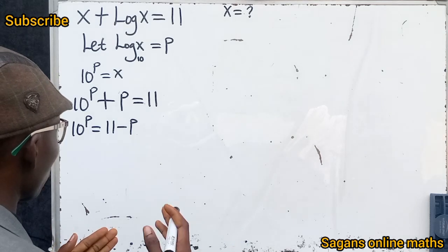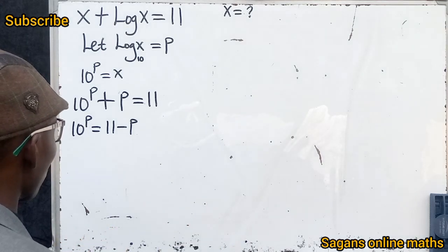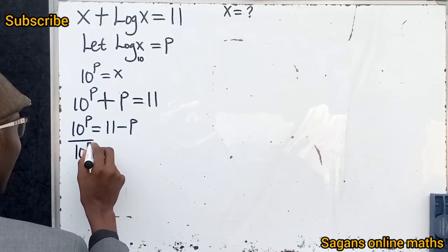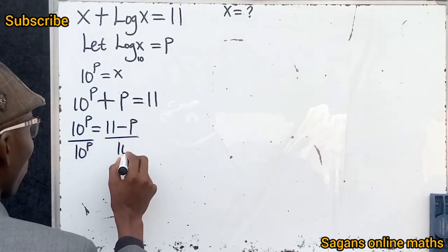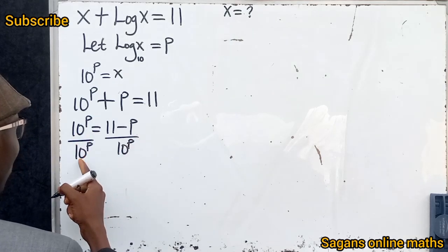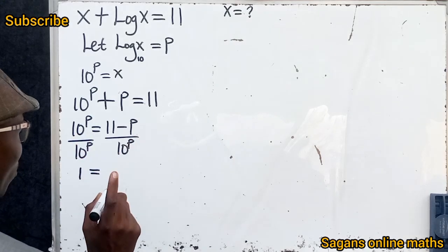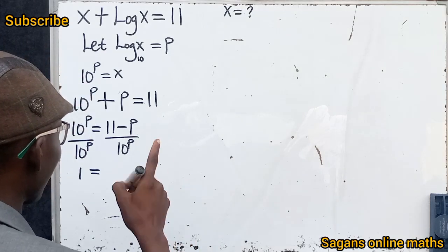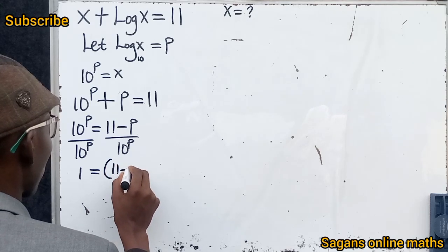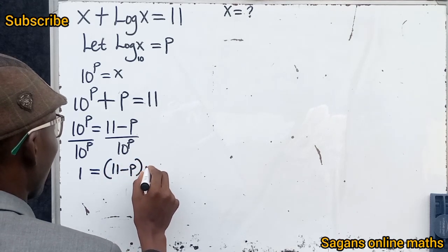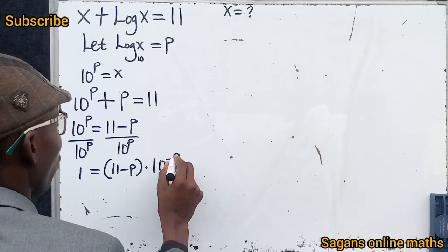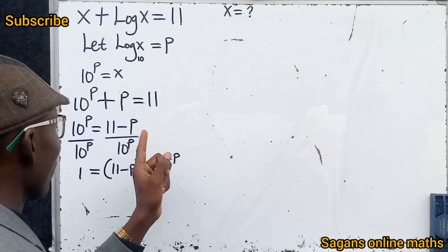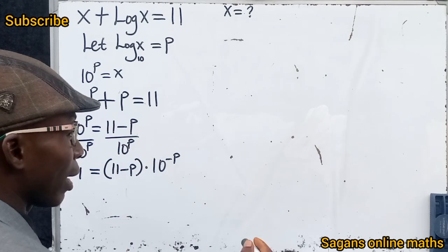Is there any method we can follow? Yes. What if we divide both sides by 10^p? Dividing 10^p by 10^p gives 1, and by one of the properties of indices we can write the right side as (11 - p) multiplied by 10^(-p). So 1 = (11 - p) · 10^(-p).